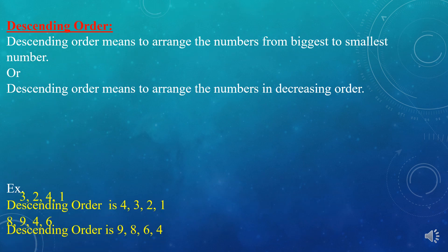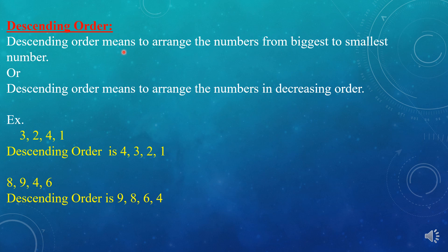Now, descending order. Descending order means to arrange the numbers from biggest to smallest, or in decreasing order. For example: 3, 2, 4, 1. We will write in descending order — first we write the biggest number. Here 4 is the biggest, so we write 4, then 3, then 2, then 1.